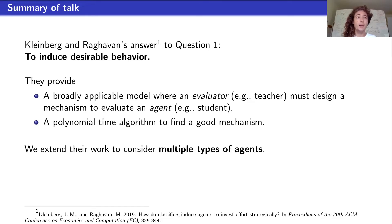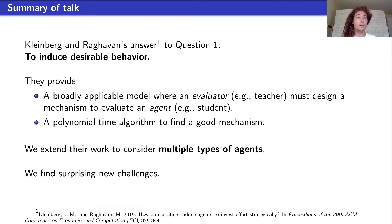Our paper extends this model to consider multiple types of agents. The prior work was only in the case where all agents have the same type. We find that there are surprising new challenges: a lot of the things that hold in the one-agent case no longer hold with multiple agents, and they require some new innovations to overcome them.